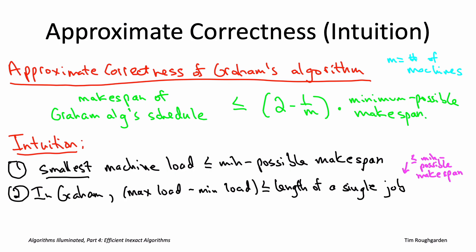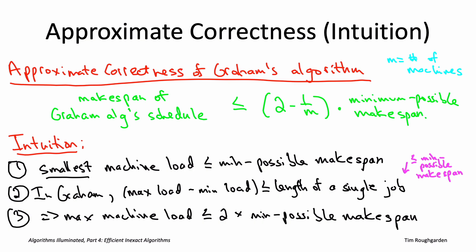Putting those two things together: the least-loaded machine at the end of Graham's algorithm has load at most the minimum possible makespan, and the maximum machine load can exceed it by at most one job length, which is itself at most the minimum possible makespan. So the makespan of Graham's schedule can't be more than double the minimum possible. In the more careful analysis in the next couple of slides, we'll see that you actually get the tighter bound of (2 − 1/m), where m is the number of machines.